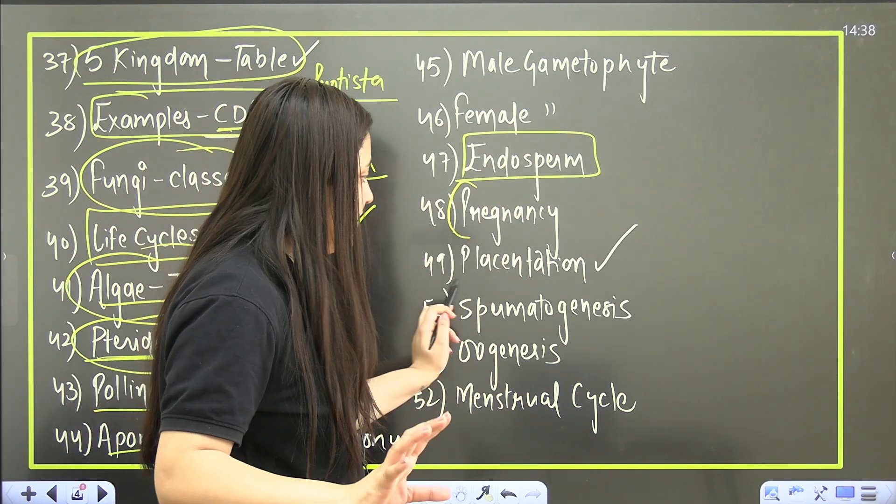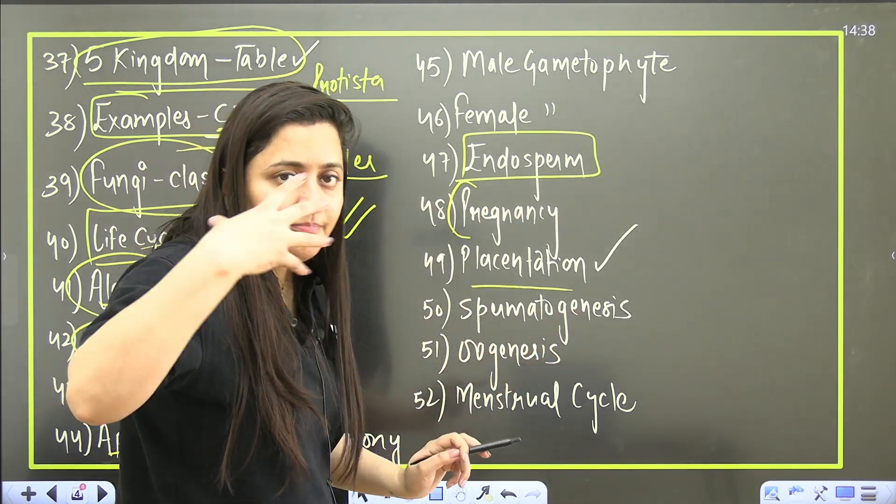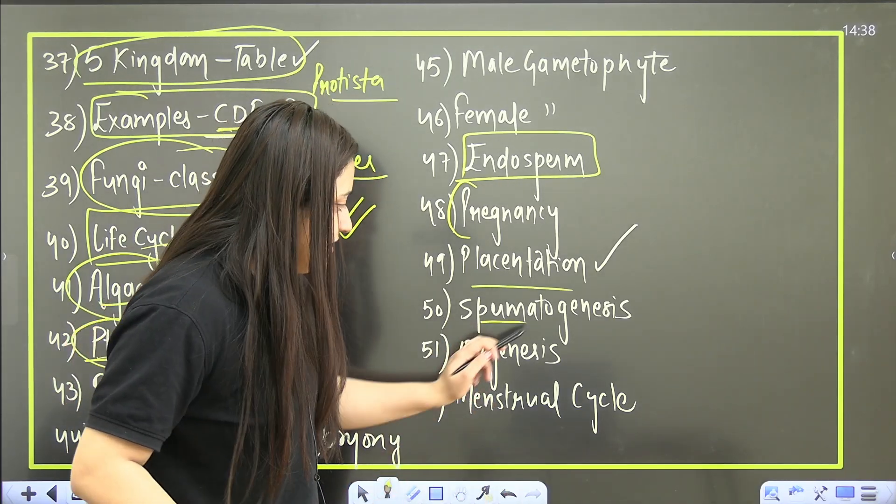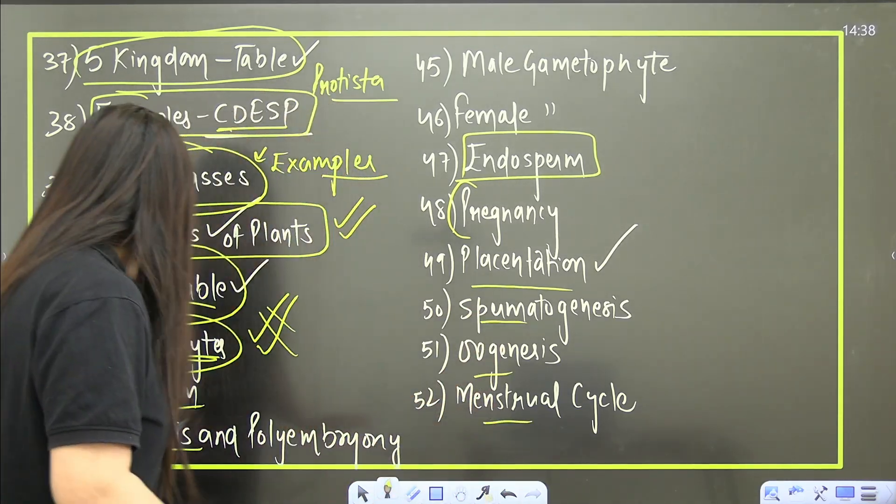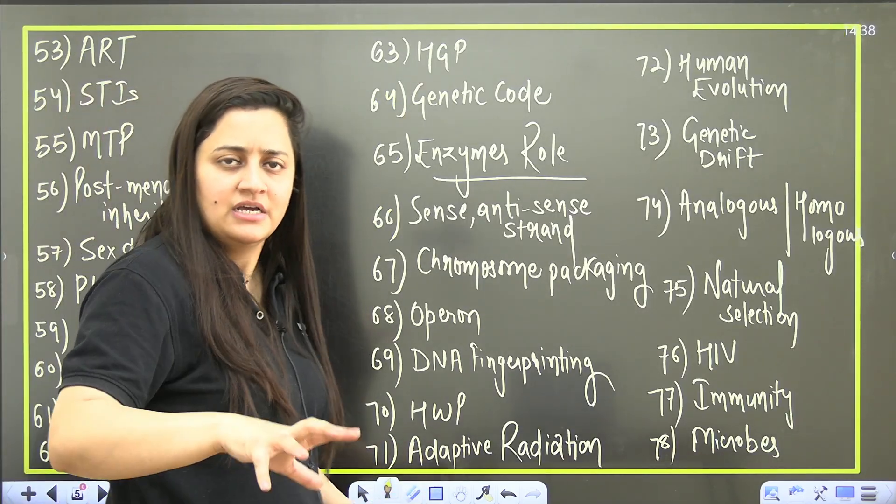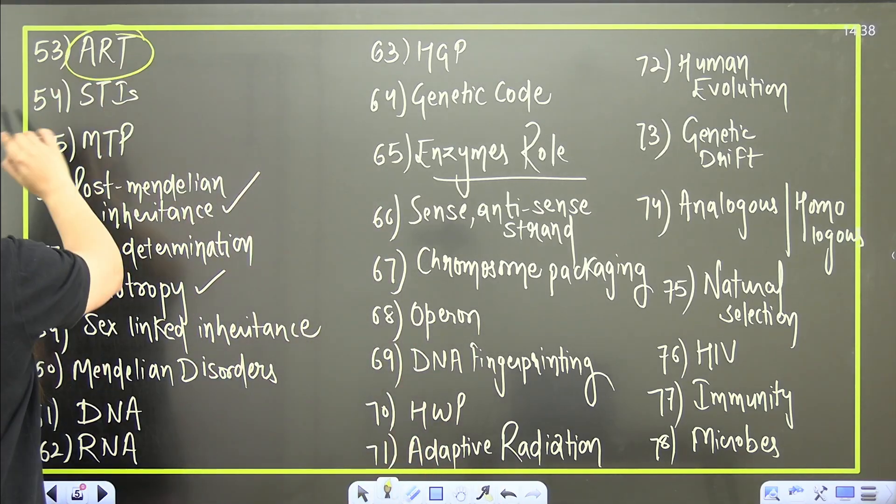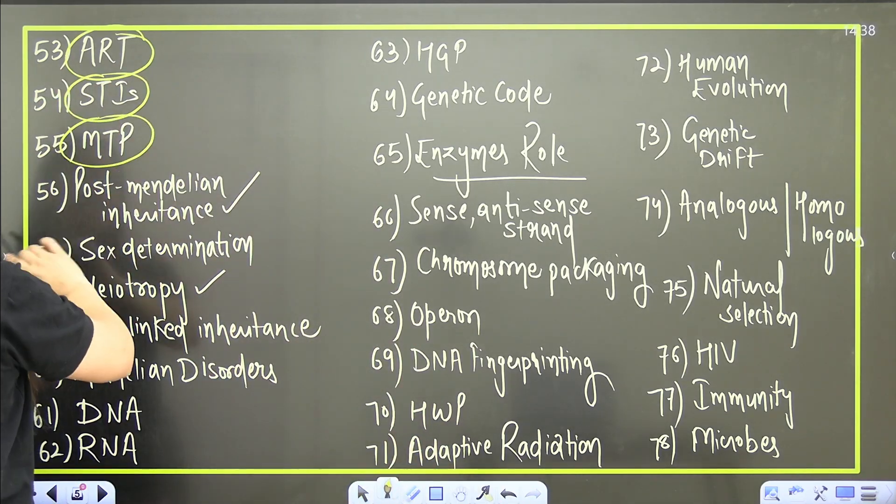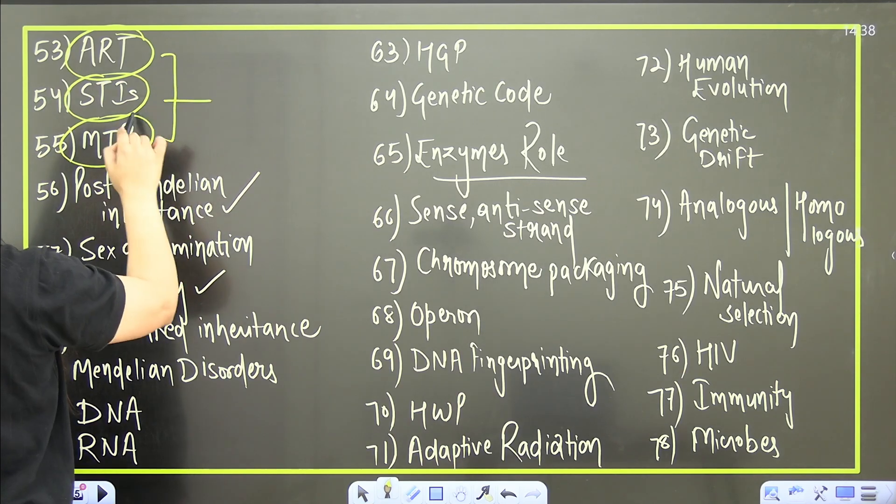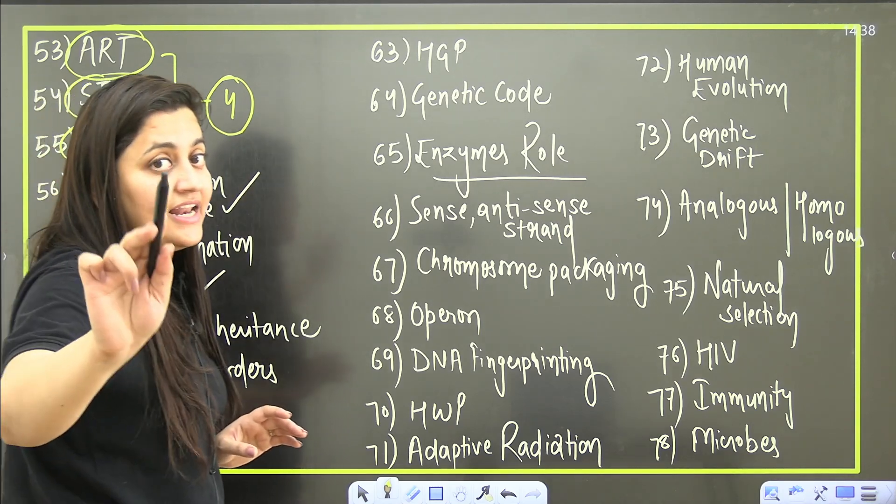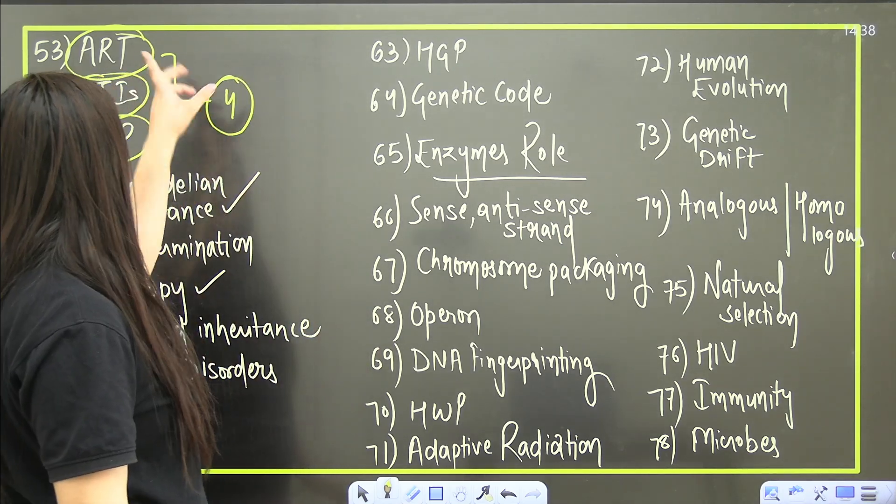Then which... pregnancy - that complete development part from the implantation and all this is what you should cover. Placentation - the placenta formation plus the hormones released. The gametogenesis, menstrual cycle - they are all related topics. It will complete all your hormonal control. Then assisted reproductive technology, STIs, MTP - from these three you will get minimum four questions, I'm telling you this thing.